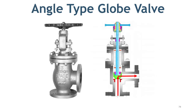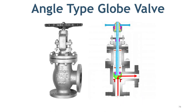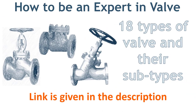This is the angle-type globe valve. In this type of globe valve, the flow of fluid changes its direction by 90 degrees. This type of globe valve is used where you want to change the direction of flow with control. Depending on your requirements, you can choose the valve that suits your needs. If you want to learn more about 18 types of valve in detail, you can buy the full course 'How to Be an Expert in Piping Valve,' with details in the link in the description.